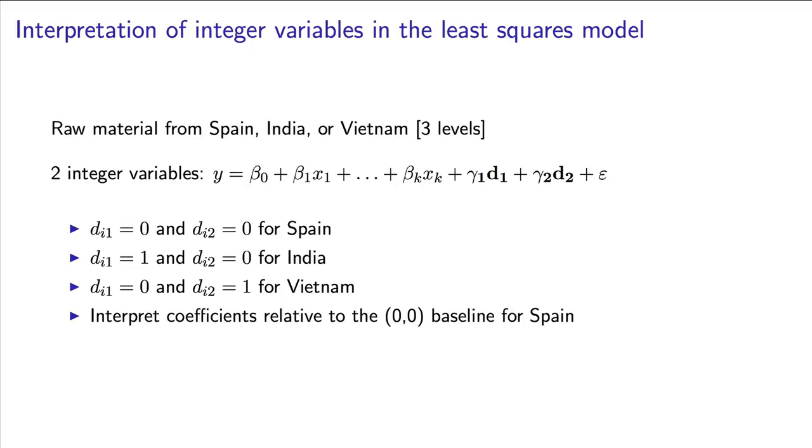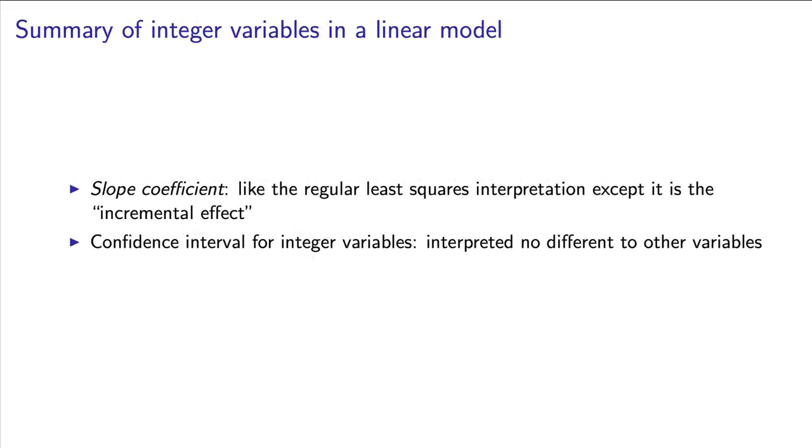I want to close by emphasizing that the interpretation of these coefficients, d1 and d2, is no different to that from before. They're just the incremental changes. The interpretation of their confidence intervals is no different to the case from continuous variables. We would look for confidence intervals that either don't span 0 or do span 0 to determine whether the particular integer variable has a significant effect or doesn't have a significant effect, respectively, on the output value y.